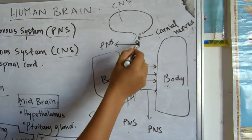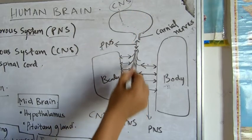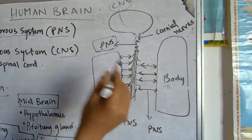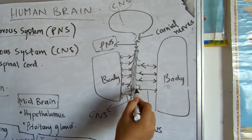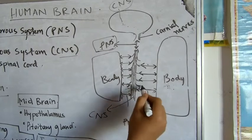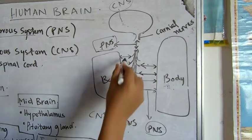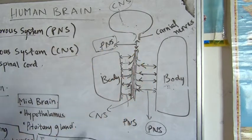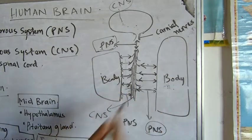Looking at the diagram: the brain, which is the CNS, is connected with the spinal cord, also part of the CNS, via the peripheral nervous system. The peripheral nervous system also makes connections between the CNS and the body. The spinal cord connects to the body via the PNS. Any arrows shown in the diagram represent the peripheral nervous system. So the PNS makes communications between the central nervous system and the body.